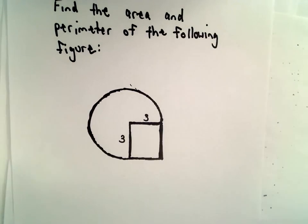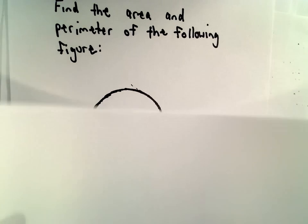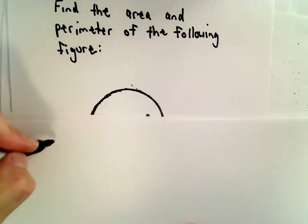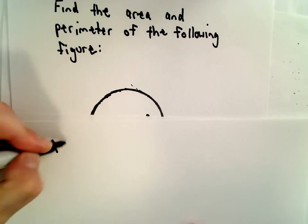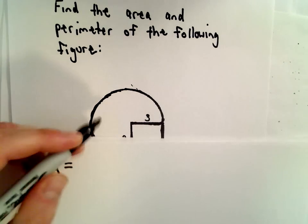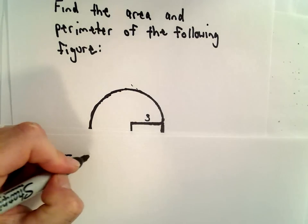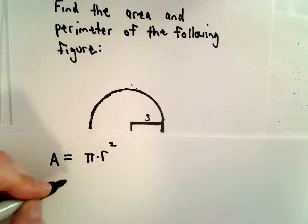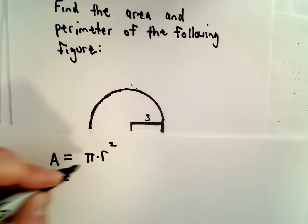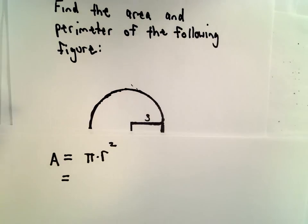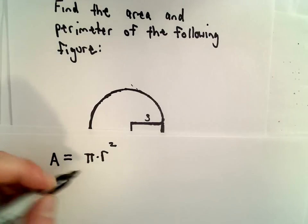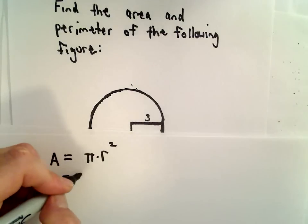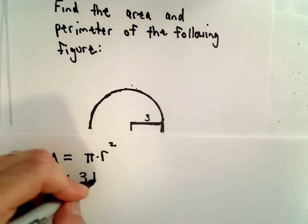Let's start off by finding the area, since that's the first thing. The area for a circle is pi times the radius squared, and we're going to approximate the area by using pi equals 3.14.